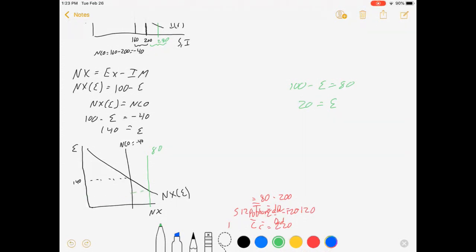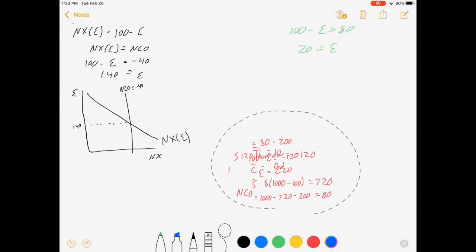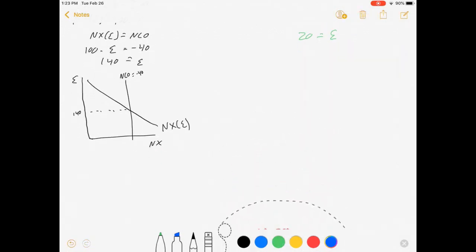Back to our net exports. We've got a net capital outflow of 80. We'll set that equal to our net exports. So the exchange rate equals 20 units of the other currency buys one unit of ours. Net capital flows went from negative 40 to 80, which pushed our exchange rate down to 20.